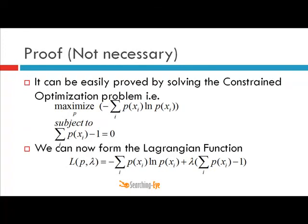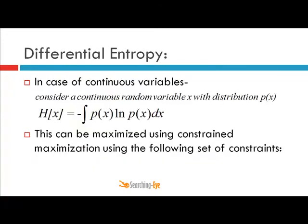This was a case of discrete entropy and now we are going towards differential entropy. For the case of a continuous random variable, we will have differential entropy. Consider a continuous random variable x with distribution px. The differential entropy associated with this random variable is given by the expression: negative integral from negative infinity to plus infinity of px log px dx, where log represents the natural logarithm.